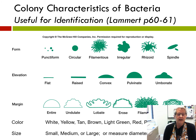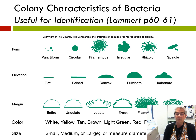You can see that colonies take different forms. Most common to us will be punctiform — they look like little dots — circular, and irregular.